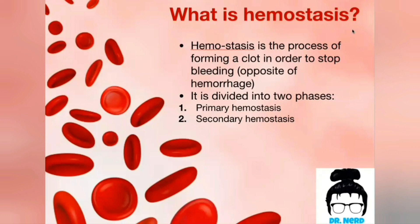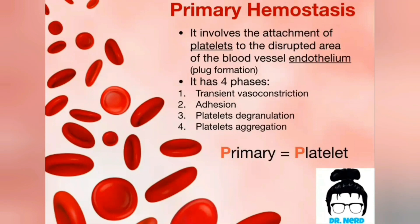A way to remember hemostasis is to divide the name: heme and stasis. Heme means blood, and stasis means keeping something in place — so you are keeping the blood inside the blood vessels. Hemostasis is divided into two phases: primary hemostasis, followed by secondary hemostasis. We will start with primary hemostasis.